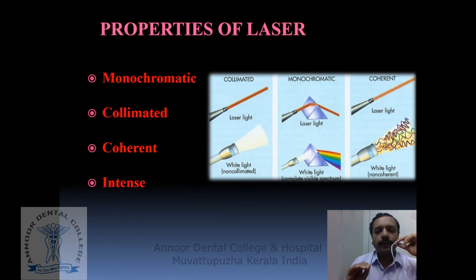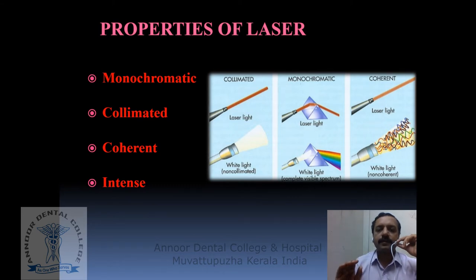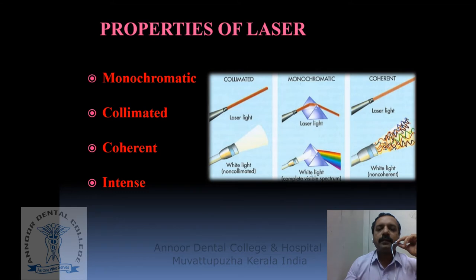Coming to the unique properties of laser which differentiate it from normal light. First, laser beam is monochromatic, meaning laser has a single wavelength; that is why it has its own specific color. Normal sunlight or white light is polychromatic, containing a spectrum of wavelengths. Laser is collimated, having specific spatial boundaries and very low divergence, ensuring constant size and shape of the beam, whereas normal light is non-collimated or mostly divergent. Next, laser is coherent — meaning light waves produced by a laser have a specific form of electromagnetic energy that is in phase with one another; different photons have the same amplitude and are almost identical. Normal light is non-coherent. Finally, laser beam is intense, meaning it has high energy, which is why laser shows different effects when applied over living tissue.